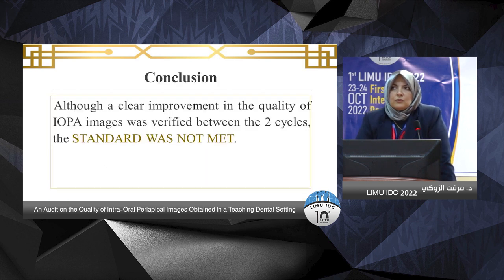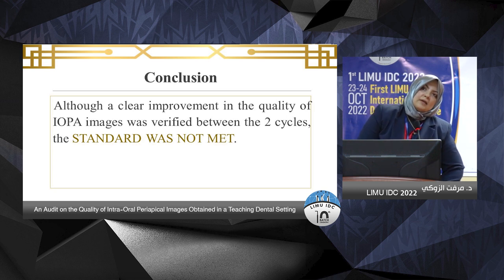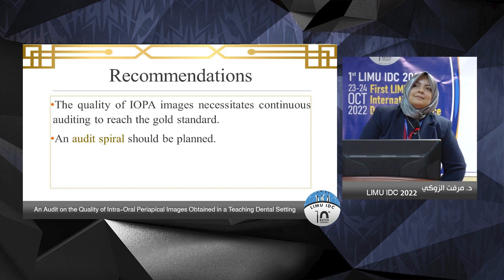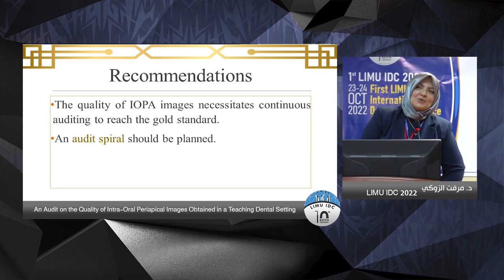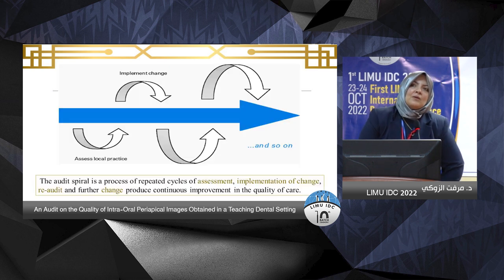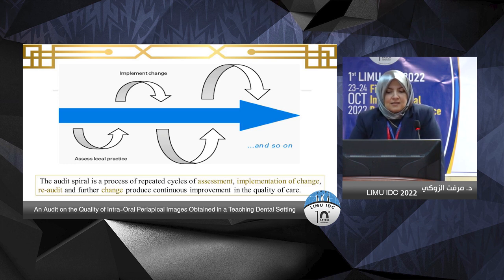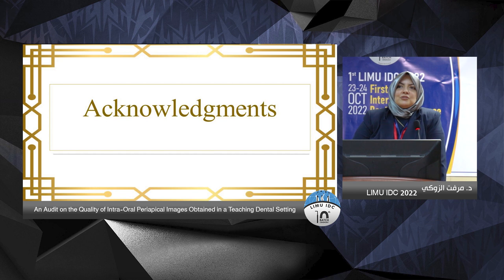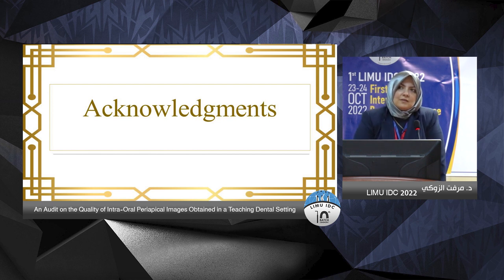In conclusion, although a clear improvement in the quality of images was verified between the two cycles, the standards were not fully met. Our recommendation is that the quality of intraoral periapical images requires continuous auditing to reach the gold standard, and audit spirals should be planned — meaning we should assess, implement changes, re-audit, and continue with further changes. There were no conflicts of interest. Special thanks go to the team, and particularly to Khuloud Al-Wurfalli, the radiographer in the radiology department.